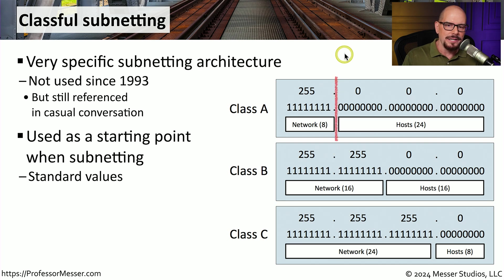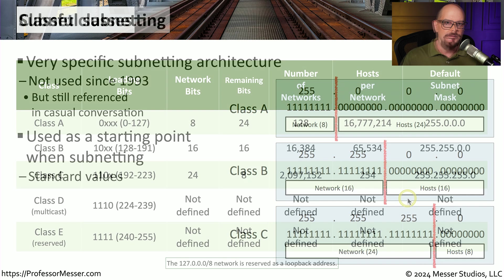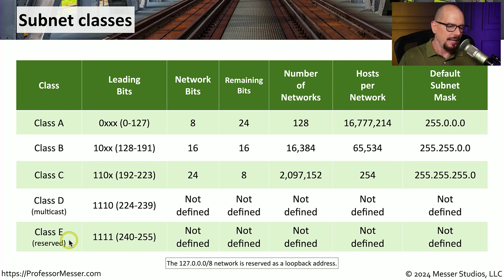With class A, that line is drawn after the first eight bits. In a class B address, that line is after the first 16 bits. And in a class C address, that line is after the first 24 bits. Here's a table that defines the different subnet classes for class A, class B, class C, class D, and the reserved class E. You can see on the right side the default subnet masks: class A has 255.0.0.0, class B is 255.255.0.0, and class C is 255.255.255.0.